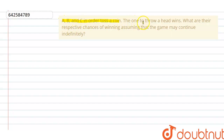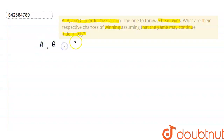The question is: A, B, and C in order toss a coin; the one to throw a head wins. What are their respective chances of winning? The game may continue indefinitely. We have three players A, B, and C, and we need to find the probability of winning for each of them separately.